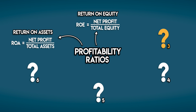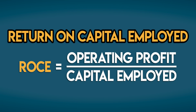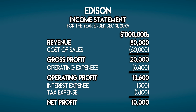The third profitability ratio you should know is return on capital employed, or ROCE. We can work out return on capital employed by dividing operating profit by capital employed. We can find Edison's operating profit on its income statement — it's a couple of rungs above net profit and excludes interest and tax expenses. For this reason, operating profit is often called EBIT, or earnings before interest and tax. Edison's operating profit or EBIT is 13.6 billion dollars.